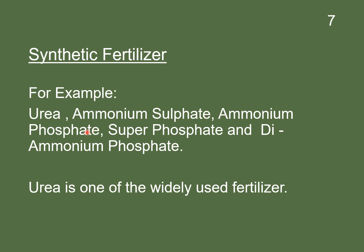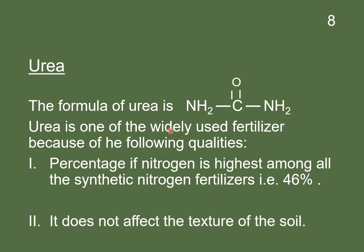Urea is one of the most widely used fertilizers. The formula of urea is NH2-CO-NH2. Urea is widely used because the percentage of nitrogen is highest among all synthetic nitrogen fertilizers — the percentage of nitrogen in urea is 46%.